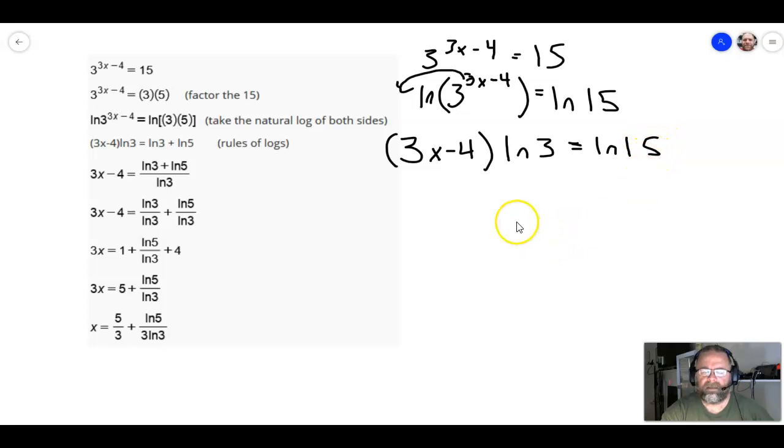Then we're going to have 3x minus 4 times the natural log of 3 is equal to the natural log of 15. The next thing I can do here is I can divide both sides by the natural log of 3.